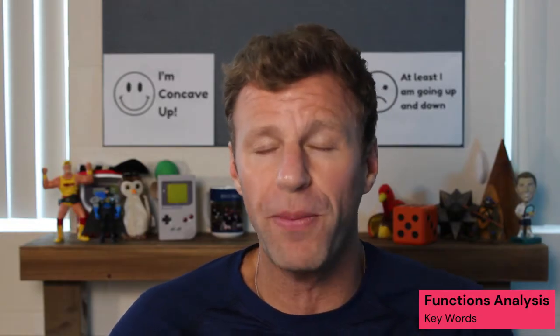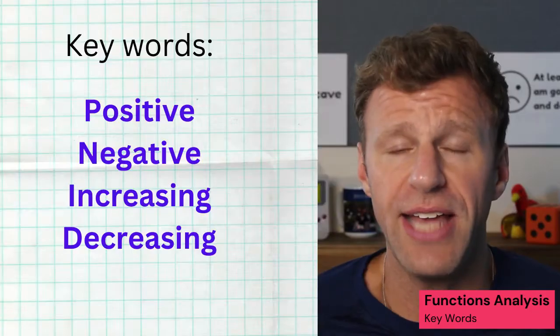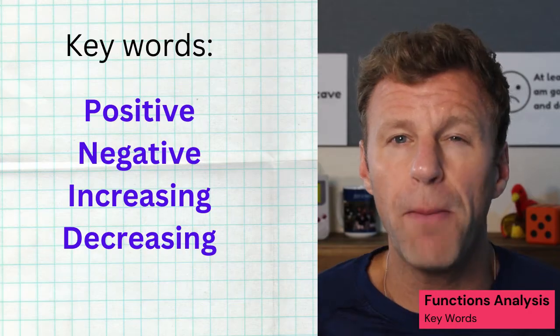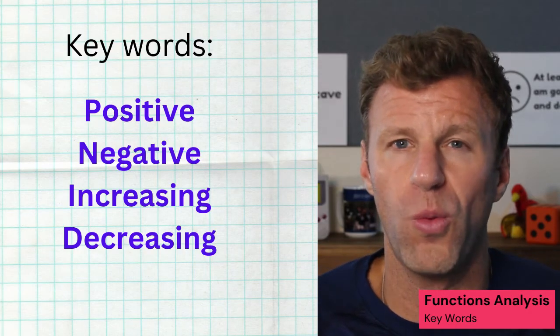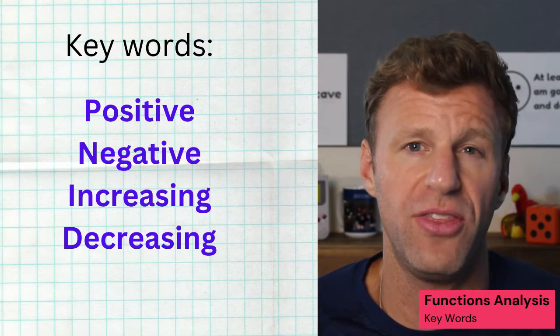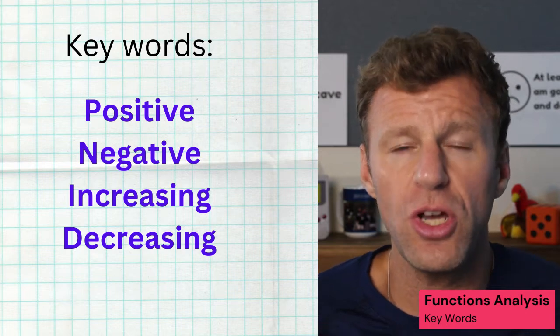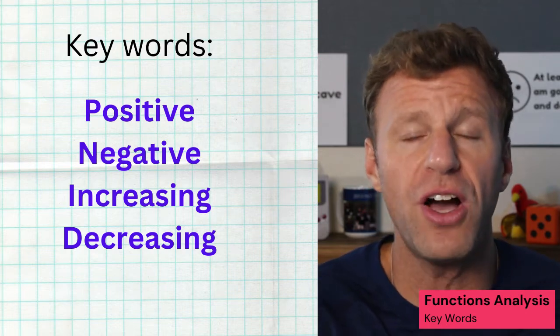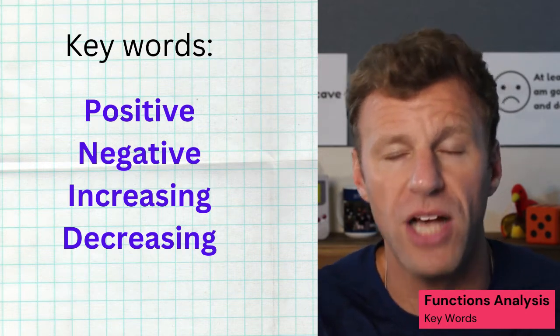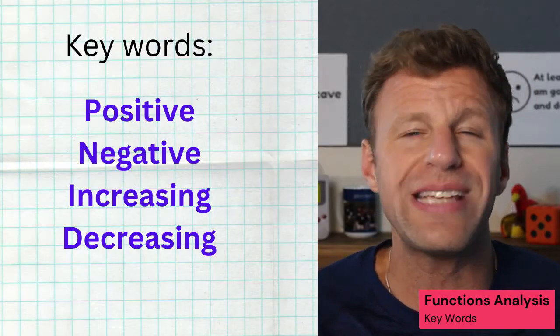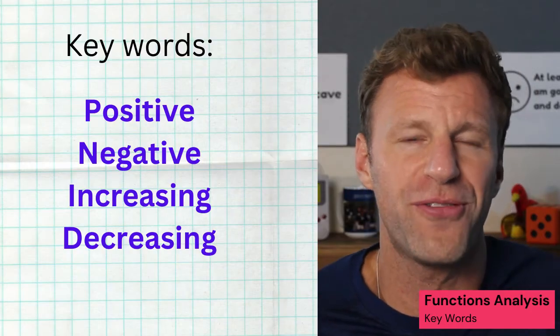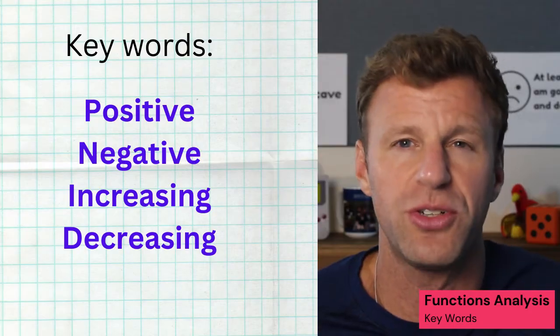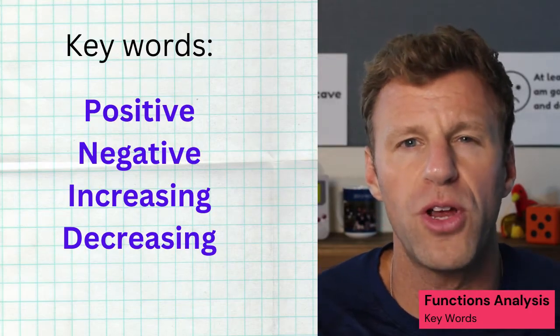Now when you're analyzing a function, and especially how a function changes, there are four really important words that you're probably going to use a lot: positive, negative, increasing, and decreasing. But it's how you use those four words that actually matters a ton in this course, because there's a huge difference between talking about how those function values are changing versus how the rate of change of your function is positive, negative, increasing, or decreasing. So let's break it all down right now.